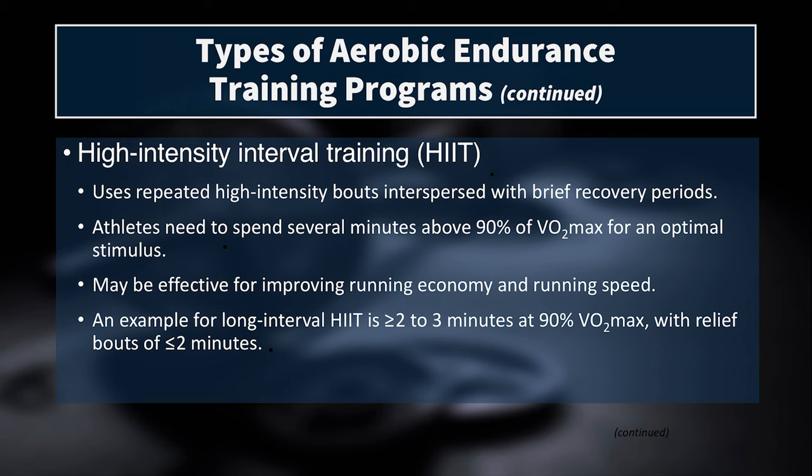HIIT uses repeated high-intensity bouts interspersed with brief recovery periods — you go again before fully recovered. Athletes need to spend several minutes above 90% VO2 max for an optimal stimulus. An example is two to three minutes at 90% VO2 max with a relief bout of less than two minutes. HIIT can be done on a bike, track, in the pool, or with exercises like kettlebells and burpees — great for general fitness but not the most sport-specific method for aerobic endurance athletes.